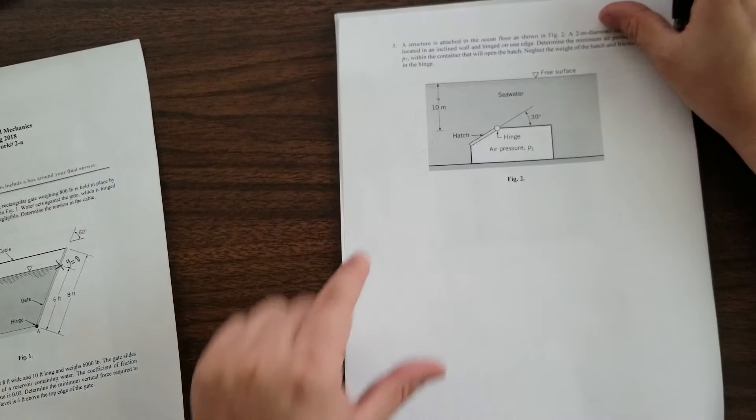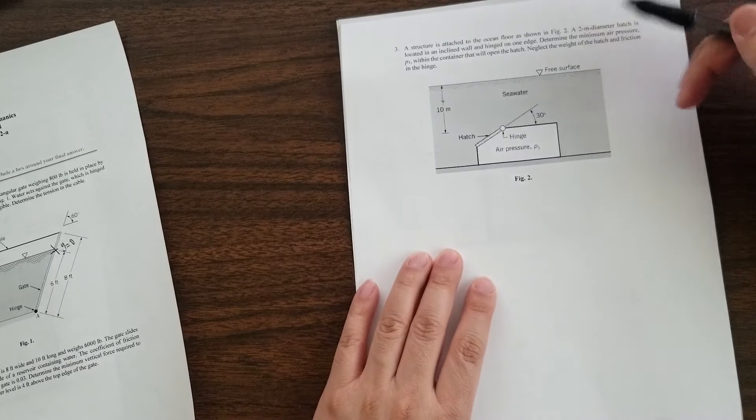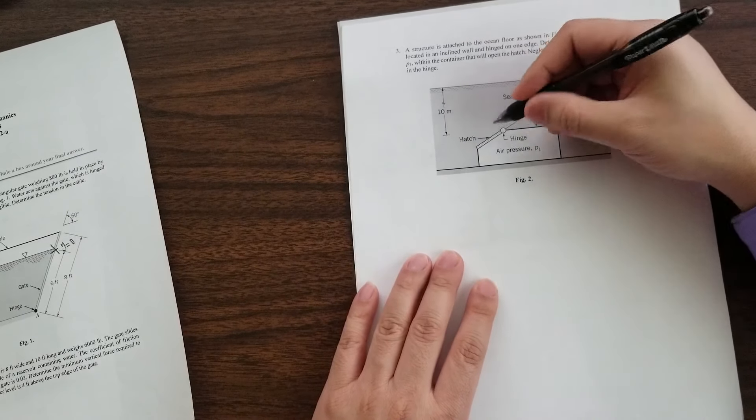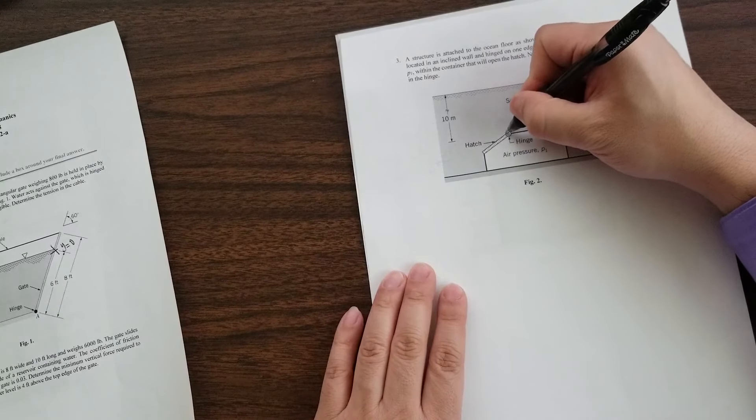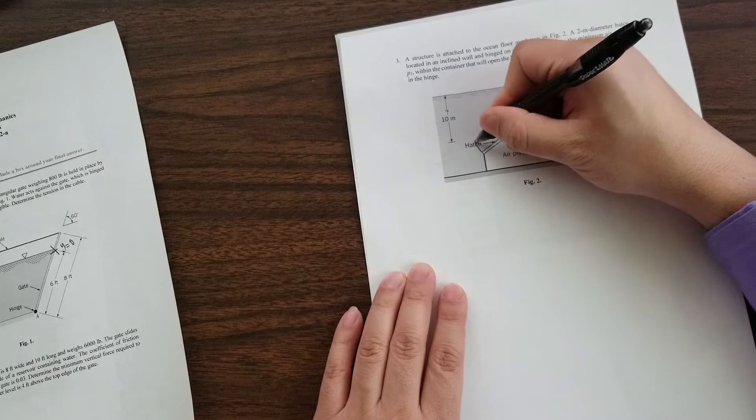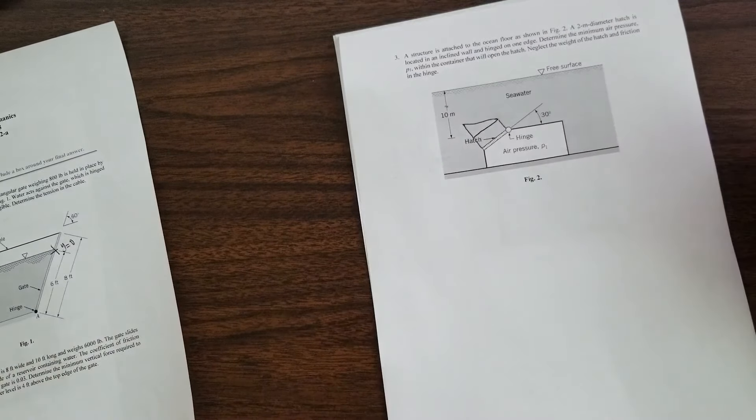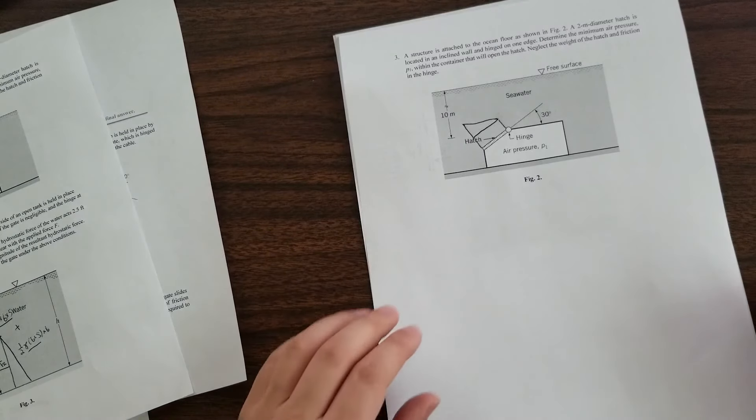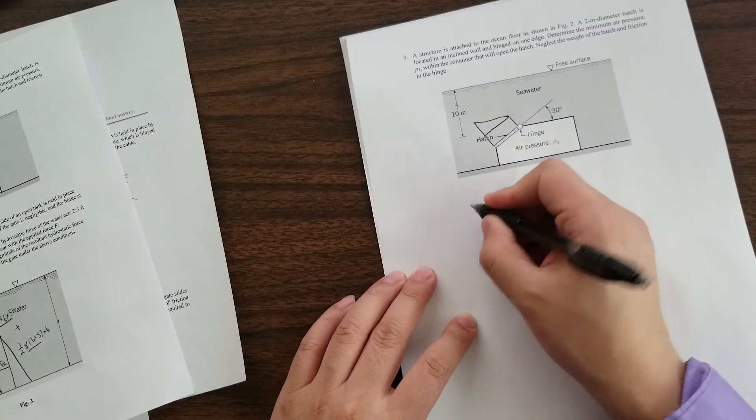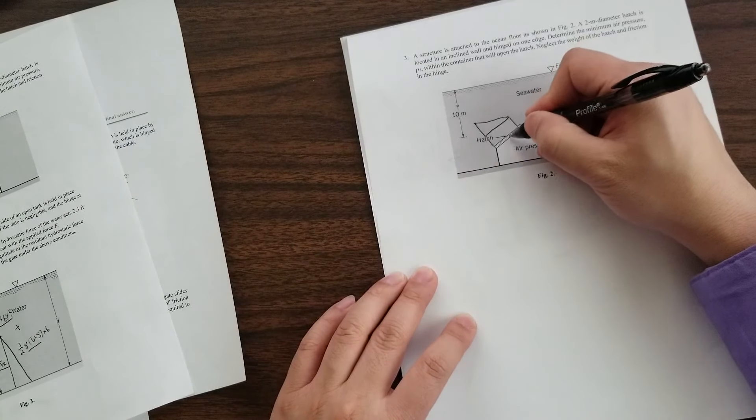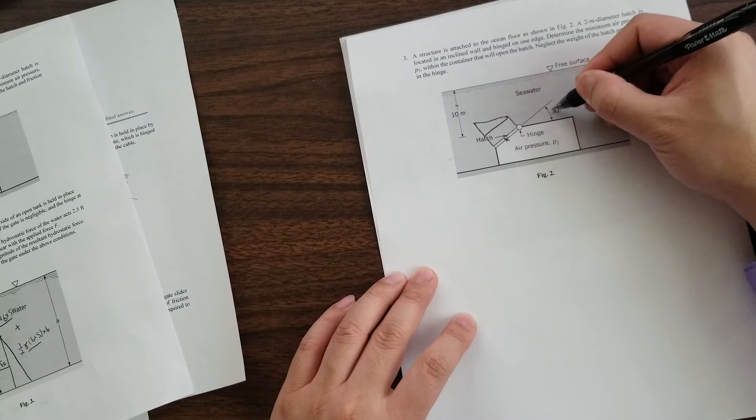All right. This problem can be tricky or it doesn't have to be. Think about this hatch here, the pressure prism. Let's draw what that is. It's a trapezoid. You can really do this in two ways. One is you can use this formula to figure out where the centroid is. First of all, you figure out where the centroid is. And this is 30 degrees. Therefore the centroid.